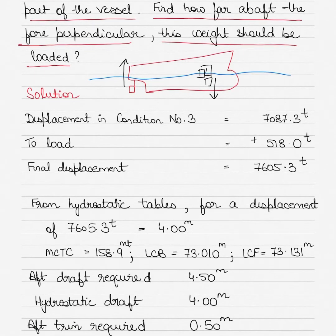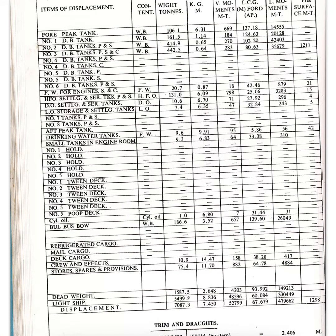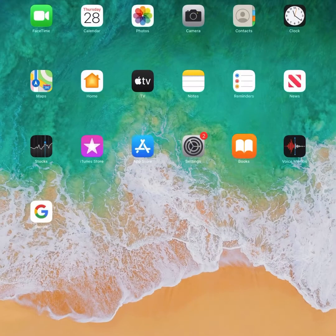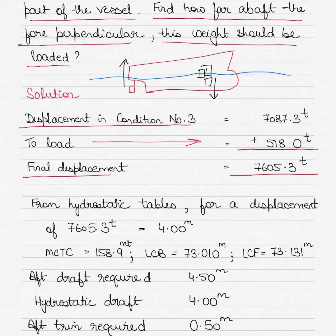First, find the displacement in condition number three from the MV Henship tables. Going into condition number three, the displacement is 7087.3 tons. You have to load 518 tons as mentioned in the question, so the final displacement increases to 7605.3 tons — that's the final displacement after loading.